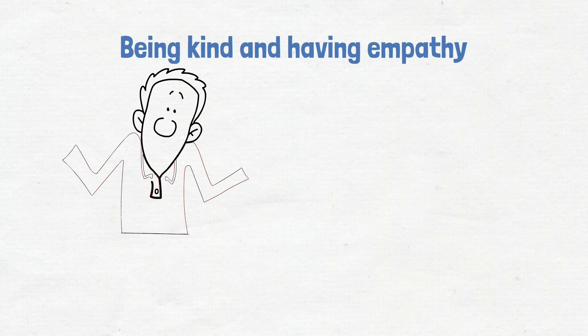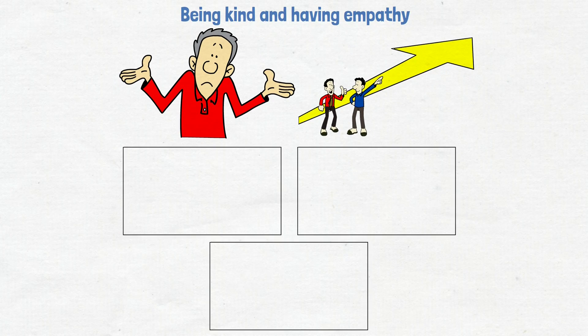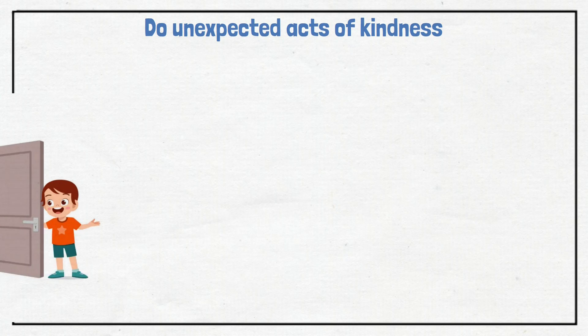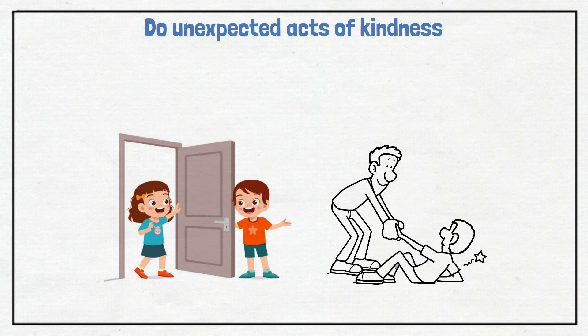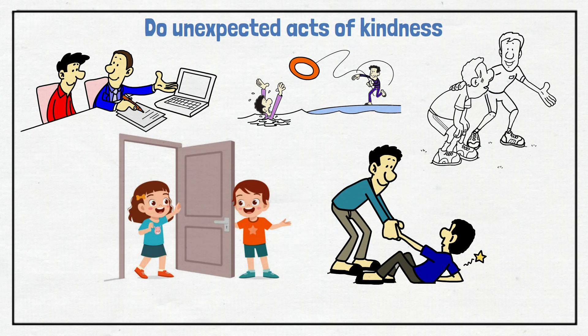Let's move on to the part about being kind and having empathy. Attraction is more than just how someone looks. Kindness and empathy make relationships that last. So, let's look at the three habits that show kindness and love. The first thing you should do is do unexpected acts of kindness. Small things like keeping the door open or lending a hand can make someone's day and make them feel like they're important.